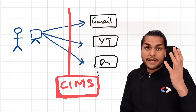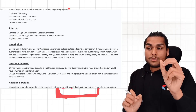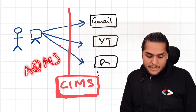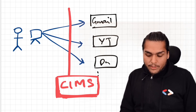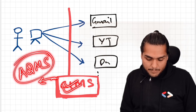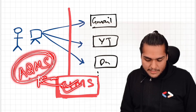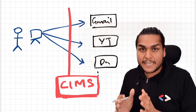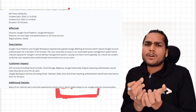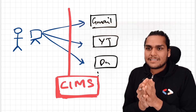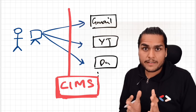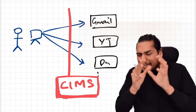Google says the root cause was an issue in their Automated Quota Management System (AQMS), which reduced the capacity for CIMS. So CIMS went down because of this dependent service — the AQMS reduced the capacity of CIMS. Why did AQMS do that? Google has not released those details yet. But because CIMS was dependent on that system, this whole big outage happened. SPOF systems are very critical components of any large-scale system.